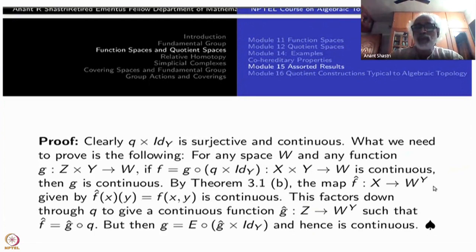Namely, the map F_* from X to W^Y given by F_*(x)(y) is equal to F(x,y). Remember F(x,y) is a function from X × Y to W. So if this is continuous, then F_* will be continuous and conversely. So we have passed down to this one. Here we have used the fact that Y is locally compact.